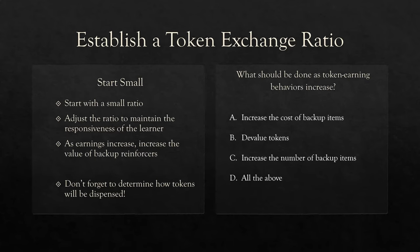What should be done as token-earning behaviors increase? A) increase the cost of backup items — absolutely, if they're doubling how often they earn tokens, keep it effective. B) devalue tokens — you can decrease the value of tokens. C) increase the number of backup items — maybe add more luxury or expensive items. All of these are options as token-earning behaviors increase. The answer is D — all of the above. As we become more successful, we shift the exchange ratio and adjust the economy.